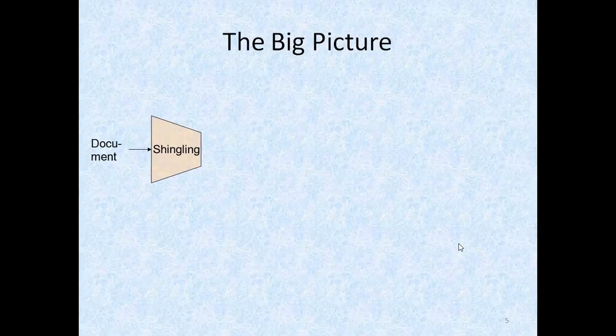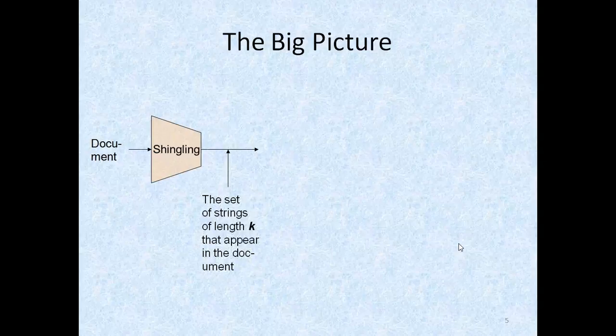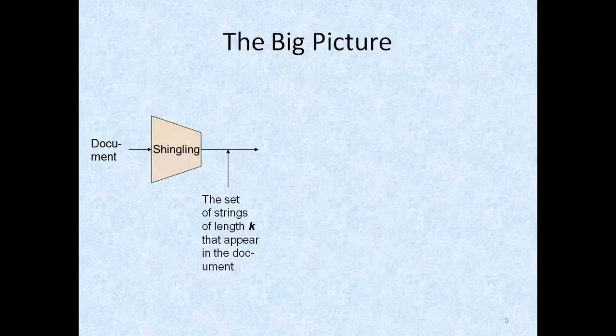The big picture is this. If you have a document, we run a process called shingling of that document, which creates a set of substrings. You identify a number k and collect all substrings of length k — starting from character 0 to k minus 1, then 1 to k, 2 to k plus 1, and so on. If the document size is n, you'll have n minus k plus 1 shingles.